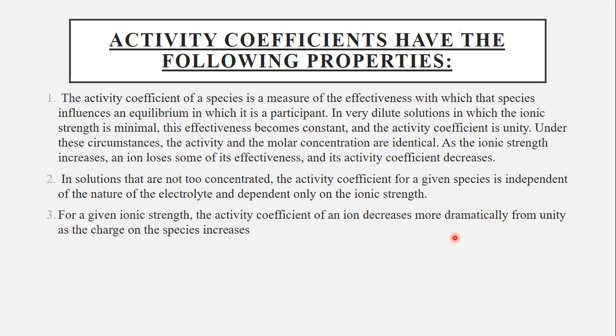Activity coefficients have the following properties. The activity coefficient of a species is a measure of the effectiveness with which that species influences an equilibrium in which it's a participant. In very dilute solutions in which the ionic strength is minimal, this effectiveness becomes constant and the activity coefficient is unity. Under these circumstances, the activity and the molar concentration are identical. As the ionic strength increases, an ion loses some of its effectiveness and its activity coefficient decreases.